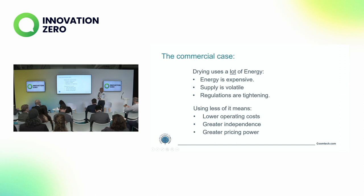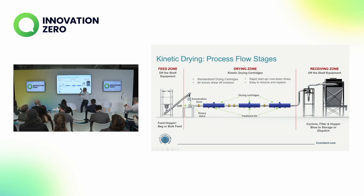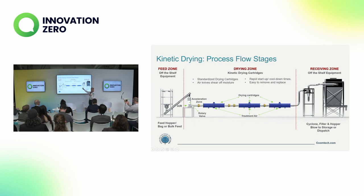If we're using less energy, it's cheaper — but it's also greater independence. You've decoupled your business from volatile, uncontrollable, difficult factors that could either stop your operation in its tracks or push it into a loss-making state. That gives you greater pricing power in the market. So this is our machine. We drop the material into an airflow through a rotary valve — we basically fire the material down a pipe. These blue chambers here are banks of air knives, and as the material goes down the pipe, carried in a transport airflow, it meets those high velocity counter air flows that shear the moisture off the surface of the particles.